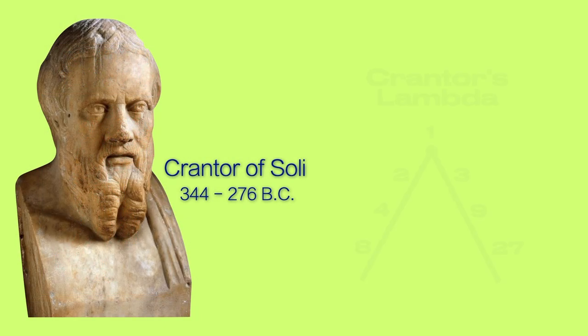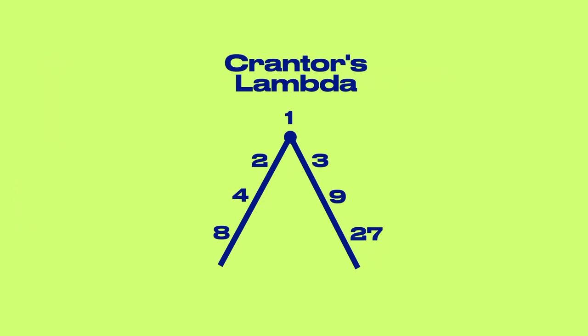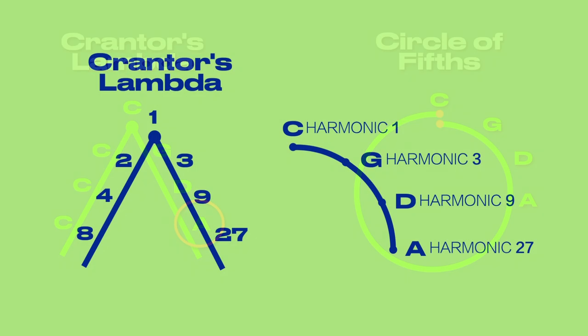This process was depicted by Krantor of Soli, a student of Plato's, in what's known as Krantor's Lambda. The left side of Krantor's Lambda is doubling, stacking octaves. The right side is tripling, stacking fifths. The same method of building a scale, mentioned earlier, that produces the problem of the Pythagorean Comma. If we build a scale by stacking fifths, we find that we're following the right side of Krantor's Lambda.